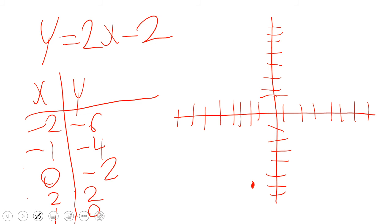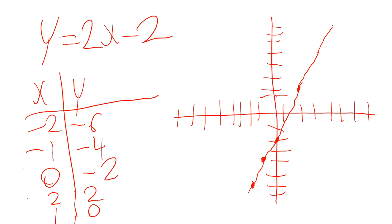When x is negative 1, y is negative 4 — so that's right over here. When x is 0, y is negative 2 — that's right over here. When x is 2, y is 2 — so that would be right here. And when x is 1, y is 0. We don't even need that point since we already have enough. You can see the points we technically needed.